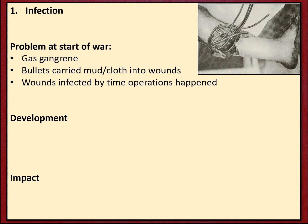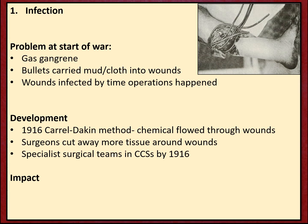Let's start with infection. At the start of the war it was very common for wounds to be infected. A major problem was gas gangrene, where wounds became infected with bacteria trapped inside the body by the projectile. They'd often taken in mud or filth from the battlefield, particularly at Ypres, or fragments of cloth from soldiers' uniforms. The bacteria trapped inside could lead to a quick and very painful death, and many soldiers were dying from avoidable infections.